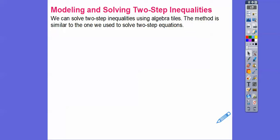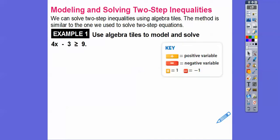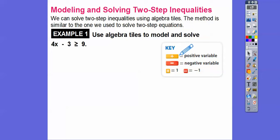We're going to use that to solve some inequalities. We can solve two-step inequalities using algebra tiles — the method is similar to the ones we used in solving two-step equations. Remember our algebra tiles: the long ones with the pluses on them — I'm going to choose yellow. The yellow long ones are our positive variables, so for 4x we'll put in four of these.